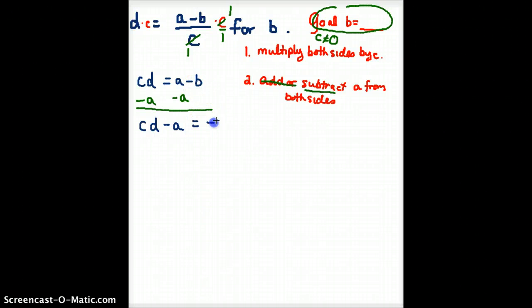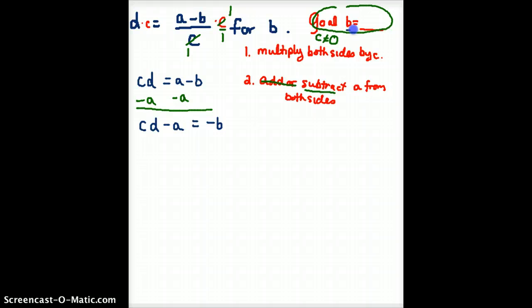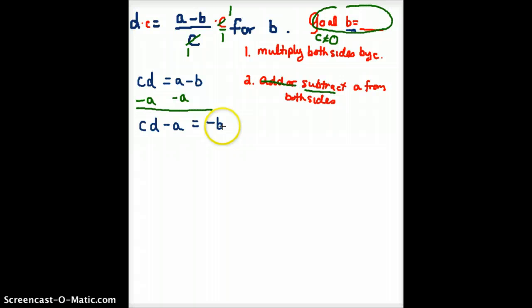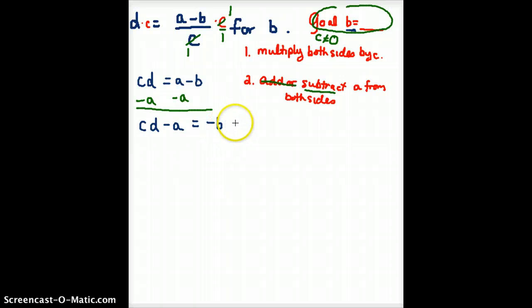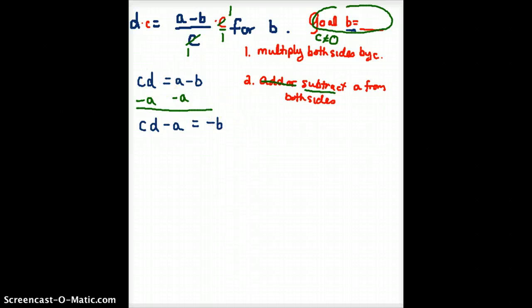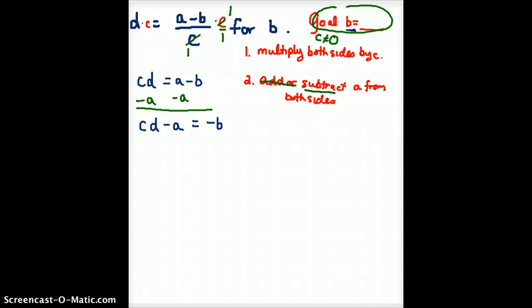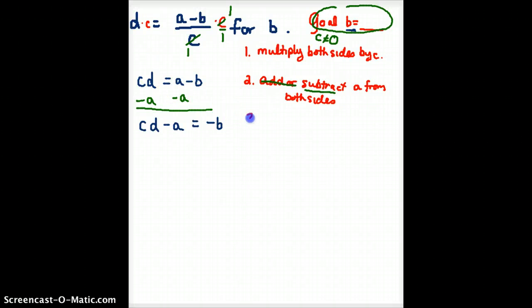Now we're almost done, and some students incorrectly believe that we are done. But when we get minus B, we have really not met our goal of solving for B equals something. So what does that mean if I have minus B? You can think of that as being like minus 1 times B.